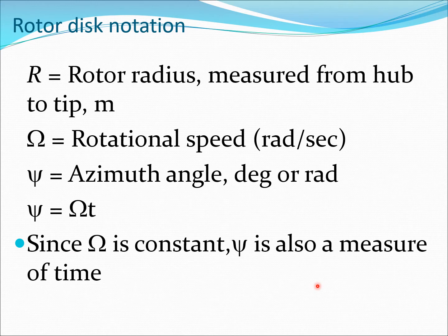R is the rotor radius measured from hub to tip, typically in meters, may range from three to six meters. Omega is the rotational speed measured in radians per second. Psi is the azimuth angle in degrees or radians, and psi also equals omega times t. For helicopter rotor, rotation speed is constant, therefore psi is a measure of time. In helicopter dynamics we will typically talk in terms of psi rather than t. When we frame the differential equations of motion, they are going to be expressed in terms of psi rather than t.